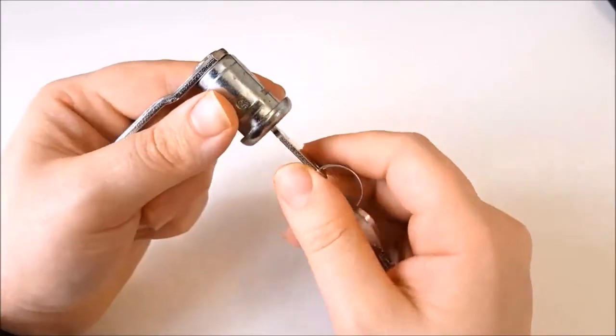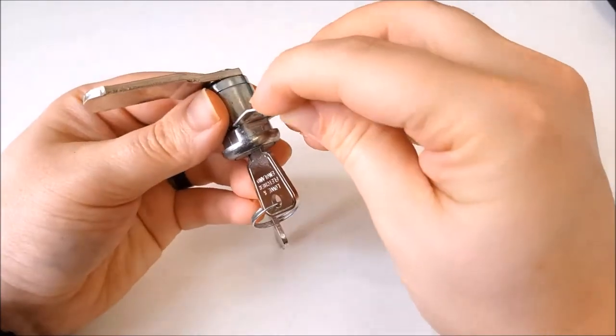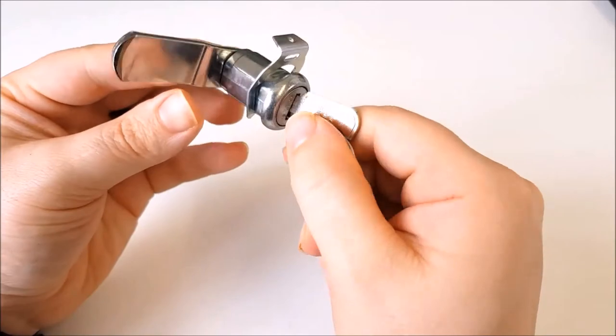The second is the horseshoe clip. You'll see the grooves in the barrel here. It's just a case of taking the horseshoe clip and sliding it into those grooves and it locks it in place.